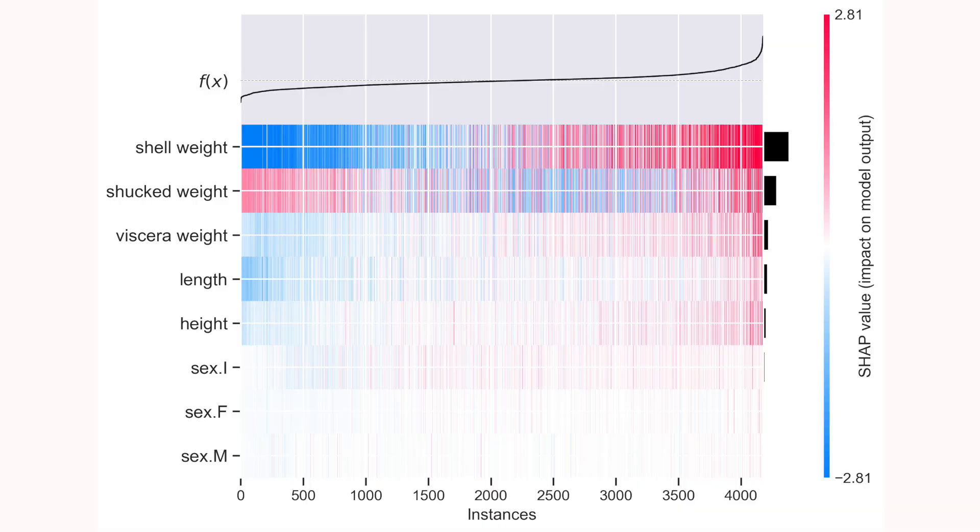Like the beeswarm, the heatmap is a plot of every SHAP value, except now we focus on patterns between SHAP values and groups of instances. By default, the instances are ordered using a hierarchical clustering algorithm, but choosing your own ordering is more useful for finding patterns — like this one, where we have ordered the instances from lowest to highest predicted number of rings. We can see some patterns emerging.